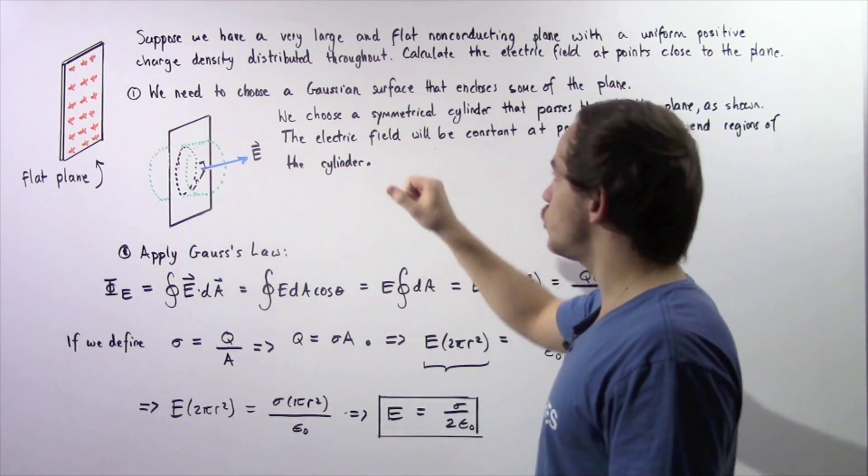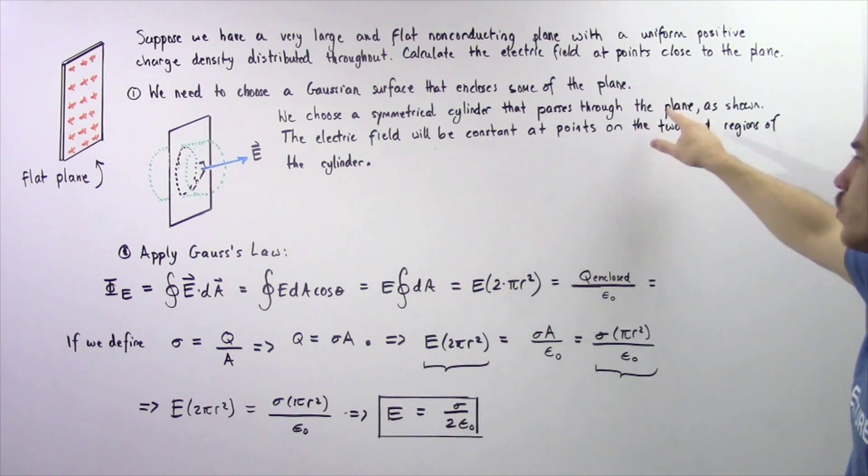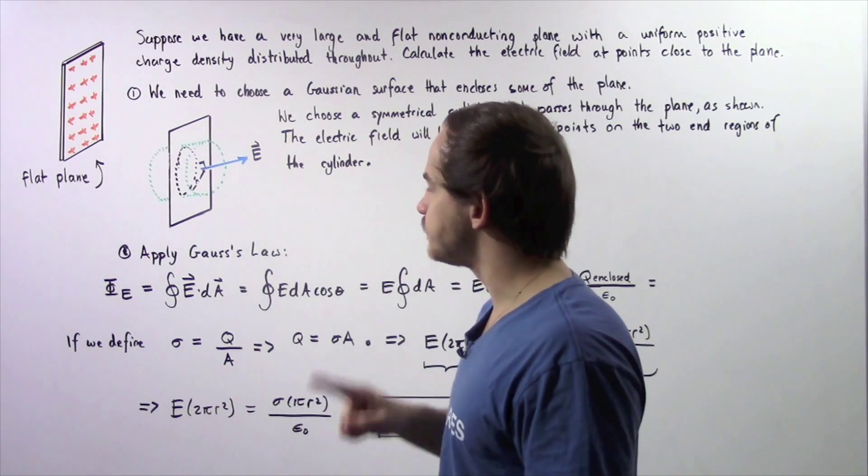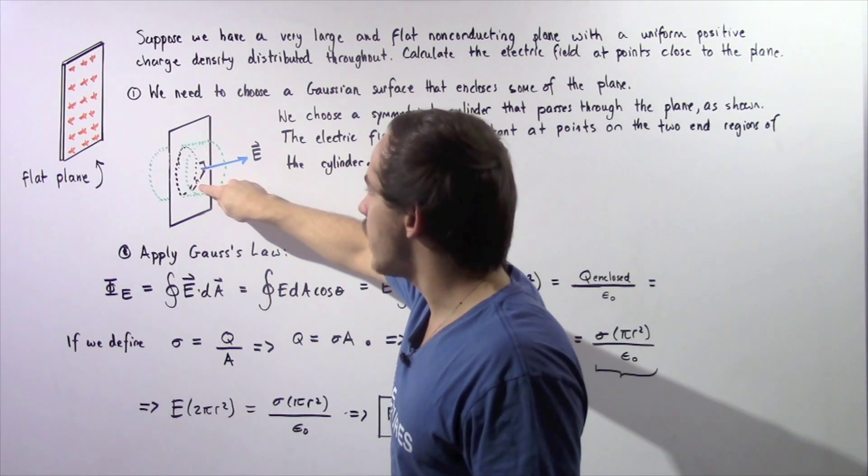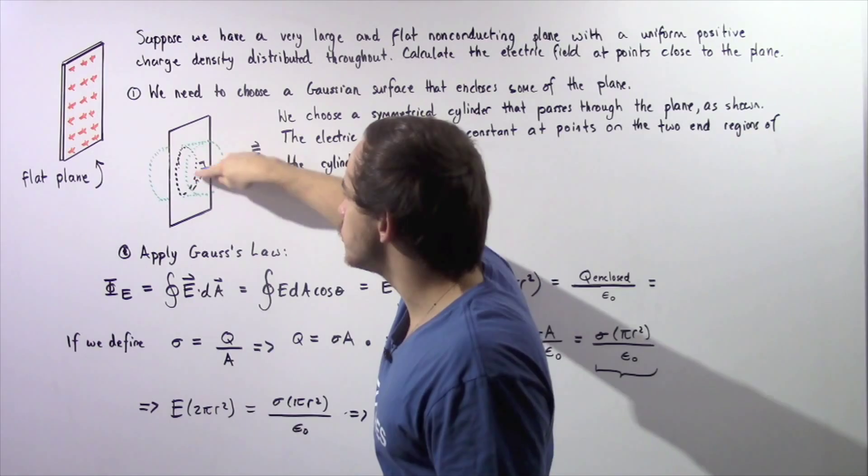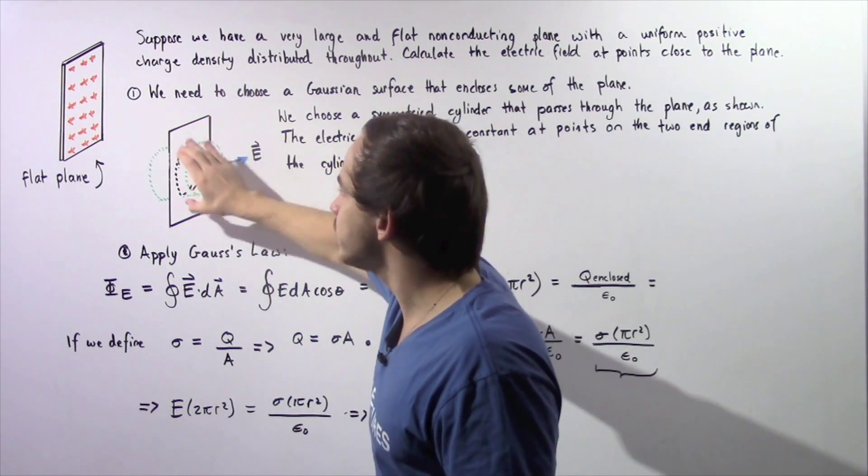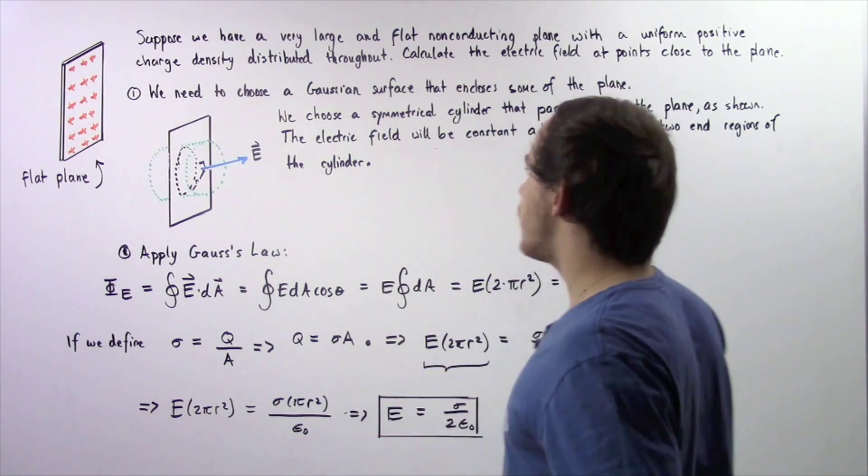We essentially choose a symmetrical cylinder that passes through the plane as shown by the following green region. The radius of this cylindrical piece is given by R and notice it encompasses this circular region shown by the black dashed region. That's the quantity of the plane that this particular region encompasses.